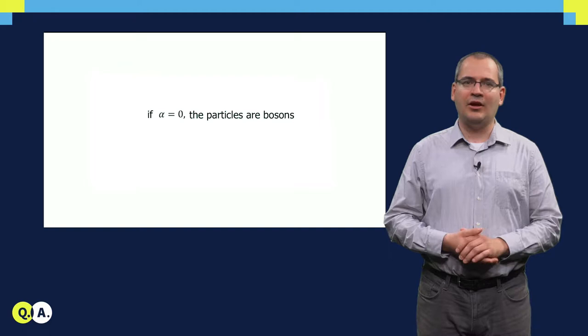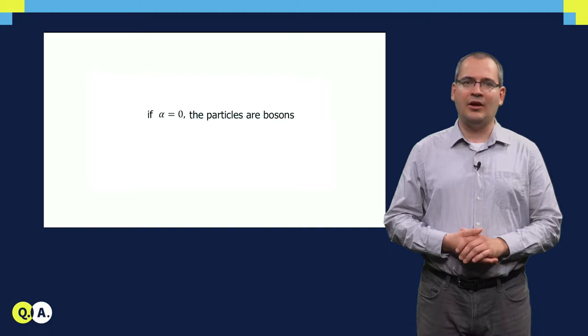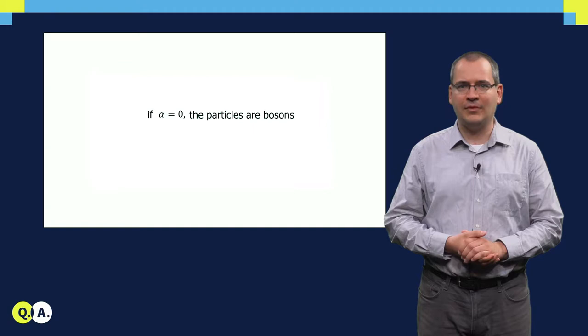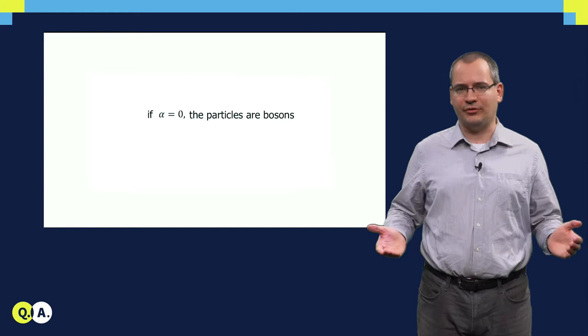It then follows that we only have two types of elementary particles. Alpha is either zero, and after two exchanges we also have zero rotation, the wave function that we started with. This alpha defines bosons, such as photons.